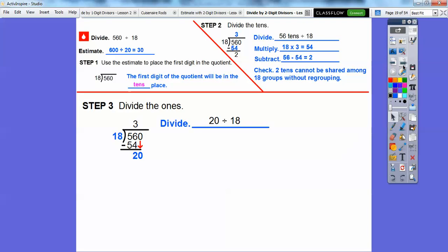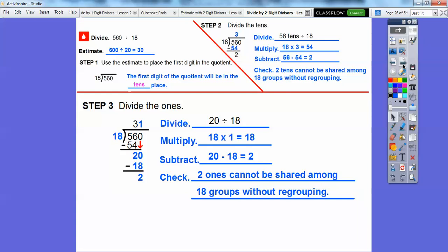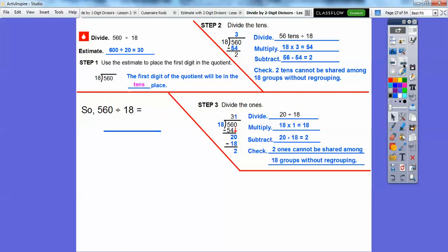Step 3 is we're going to divide the ones now. We slid those ones down right there. 18 goes into 20 one time. You can get one group of 18 into 20. Then we'll multiply 18 times 1 is 18, and we'll subtract those guys and we get 2 right there. There's nothing left to regroup. 2 ones can't be shared among the 18 groups without regrouping. We can't even regroup, there's nothing else to regroup. So this is our remainder right there. It's 31 with a remainder of 2.